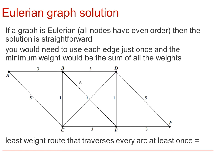So let's look at the various solutions depending on the types of graphs or network we've got. If a graph or network is Eulerian, i.e. all nodes have even order, then the solution to the route inspection problem is straightforward. We just need to use each edge once and the minimum weight would therefore be the sum of all the weights.